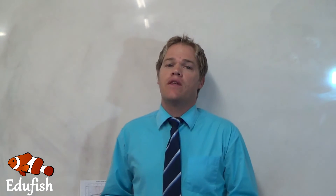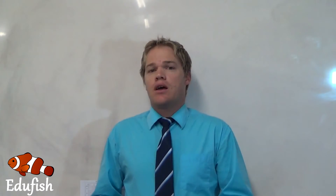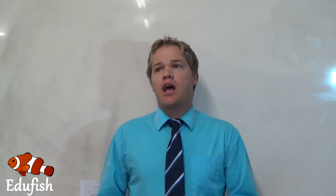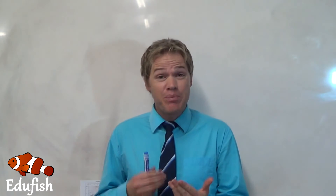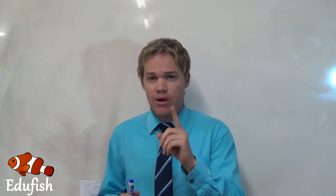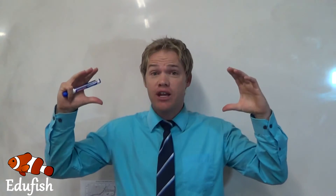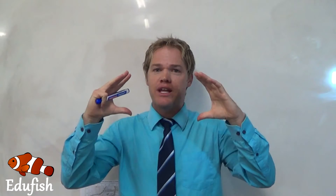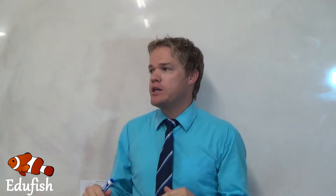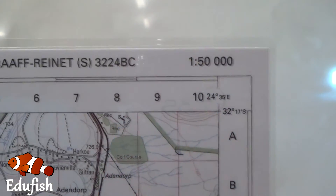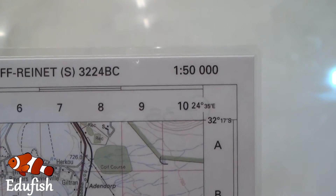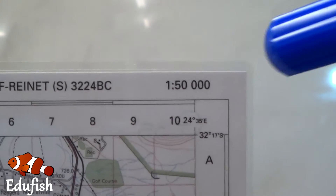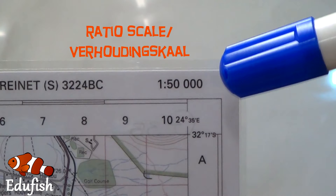Today I'm going to focus more on the ratio scale. For me, the ratio scale is a better way to explain how a certain area was made smaller in order to fit it onto a piece of paper. As you can see in the top right hand corner of the map, that's where you will find the ratio scale — that is what it looks like: 1 to 50,000.